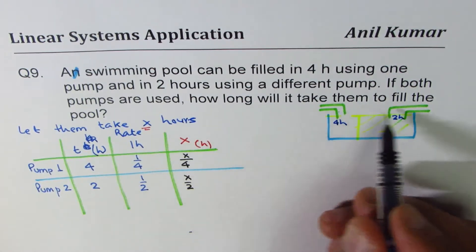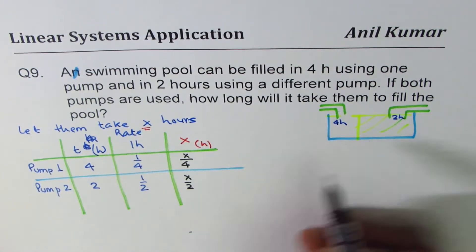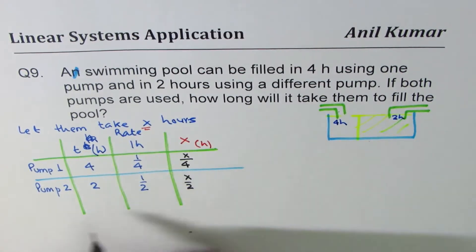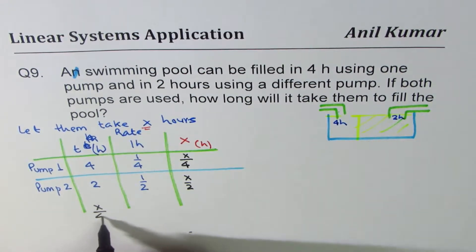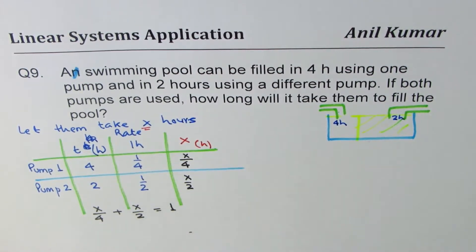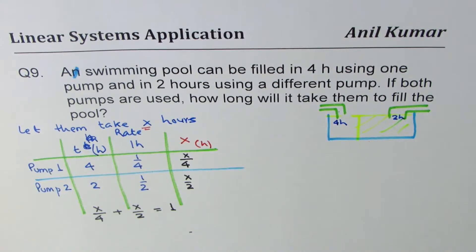But total, the whole pool gets filled up. Therefore, this should add to one whole. Do you get it? So we get the equation X over four plus X over two equal to one. So that becomes the equation whenever we are considering work done or rate of doing something. Do you understand? So that becomes the equation.